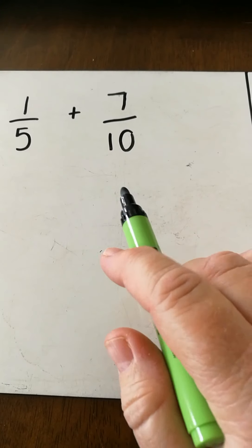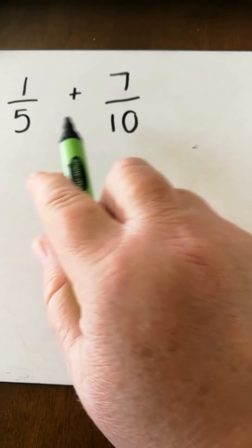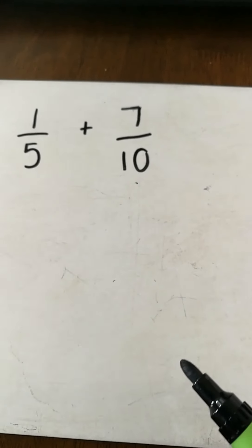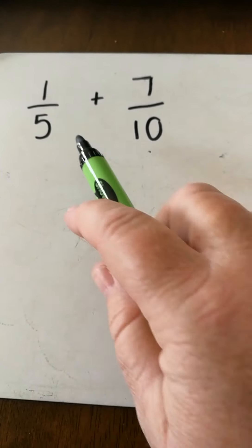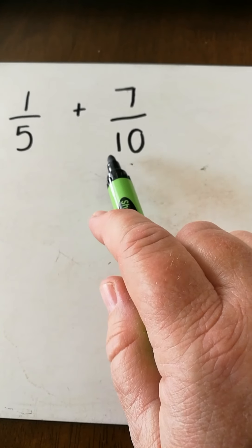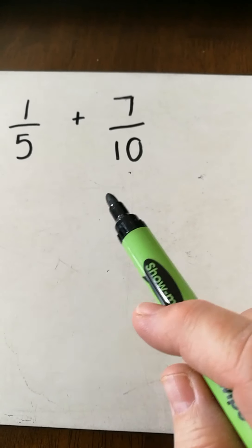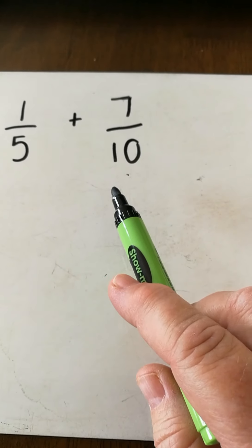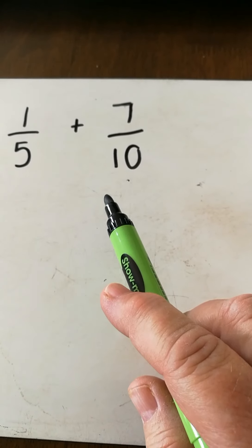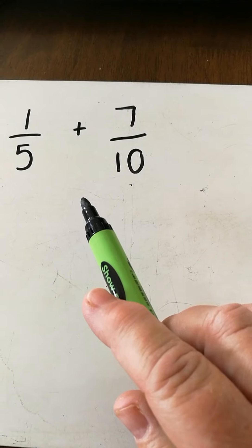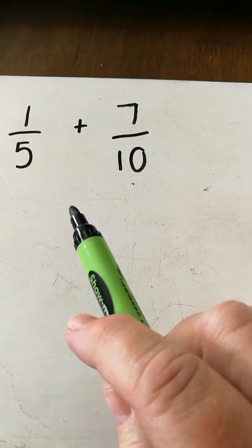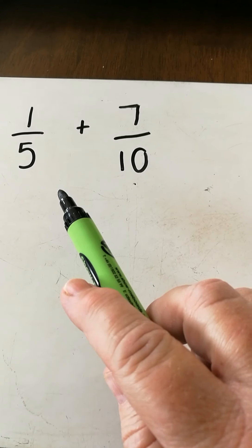Here I have two fractions and as you can see, they have different denominators. They are unlike fractions because they have different denominators. These denominators, though, are common multiples, so it makes it a little bit easier when we're working it out. When we've got unlike denominators, we need to convert one of them so that they have the same denominator, in order for us to add or subtract.